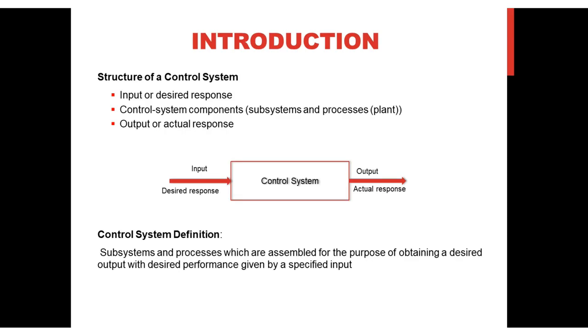A control system consists of three basic components. Firstly, the objectives of the control or the desired response, also known as the input.